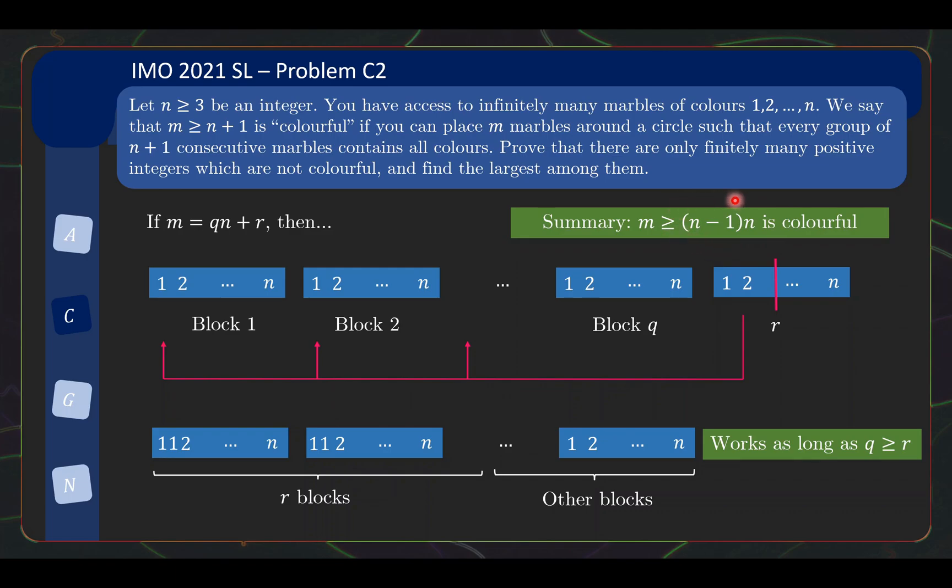So in summary, what we have done is we produce a construction where m greater than or equal to (n minus 1) times n is colorful. And why is this the bound? Well, if m is at least this, then if we write m as qn plus r, the remainder r, notice that by definition of the remainder, it is at most n minus 1. But at the same time, q is at least n minus 1. So indeed, we have q greater than or equal to r for all of these numbers over here. So we have just proven the first part of the problem, which is that only finitely many positive integers will not have a good construction. Because this construction here works for all these m's.